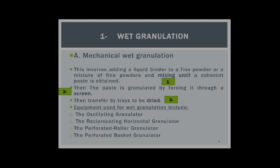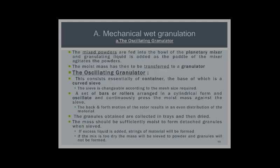The paste is then granulated by forcing it through a screen or sieve, then transferred by trays to be dried. An example of equipment used in wet granulation is the oscillating granulator, which consists of a container whose base is a curved sieve or screen, with a ribbon or arm to push the paste against the screen to produce granules of a known size.